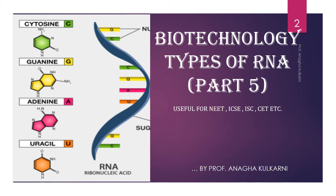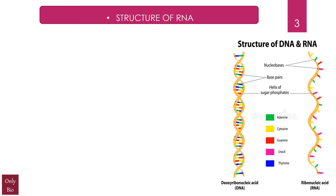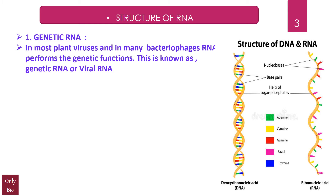In this series we are going to talk about nucleic acids in detail. On the screen you can see both the structure of DNA and RNA shown with pictures. We start with RNA. DNA has already been discussed. RNA can be broadly classified into two groups: genetic RNA and non-genetic RNA. In most plant viruses and in many bacteriophages, RNA performs the genetic functions.